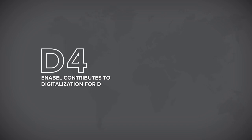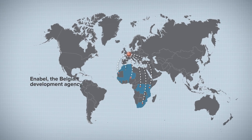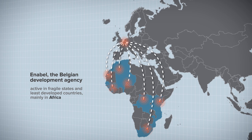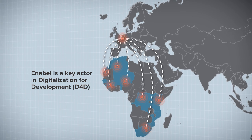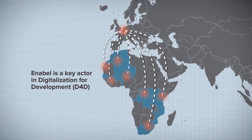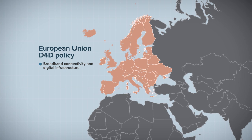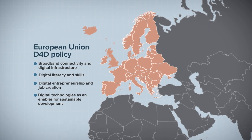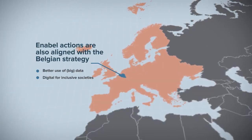Enabel, the Belgian development agency, is active in fragile states and least developed countries, mainly in Africa. Enabel is a key actor in digitalization for development and contributes to answering the tremendous digital revolution in the world. Enabel's actions are in line with the European Union D4D policy and are also aligned with the Belgian Digital for Development strategy.